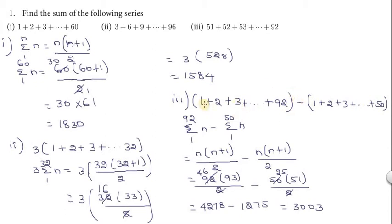So the calculation becomes: summation 1 to 92 of n, minus summation 1 to 50 of n. We apply the natural number formula to both parts, substituting n equals 92 and n equals 50 respectively.